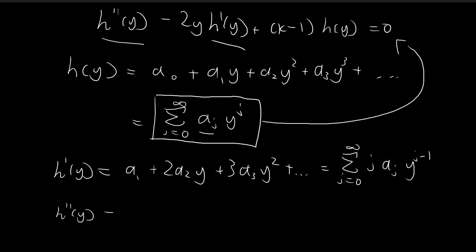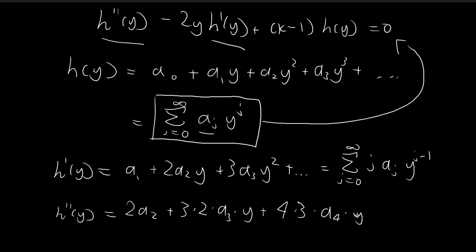To find the second derivative, we just differentiate again. So we get 2a2 plus 3 times 2 a3y, and the next term is 4 times 3 times a4 times y squared, and so on. We can express this using a summation symbol: it's going to be (j+1)(j+2) a_{j+2} times y to the power of j. You can substitute the numbers in and verify that this recreates the infinite series.